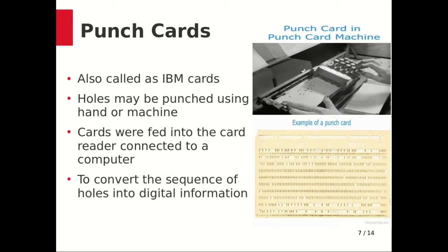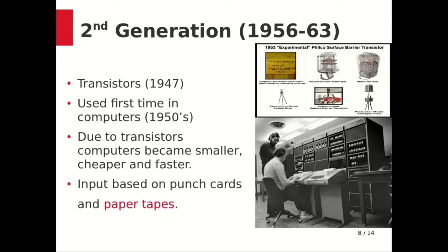Punch cards, also called IBM cards, have holes that may be punched using hand or machine. You can see the punch card and punch card machine on the right side. The cards were fed into a card reader connected to the computer. For example, if you have 10 lines of code, each line would take one punch card, and you would arrange them in a stack to convert the sequence of holes into digital information understood by the system.